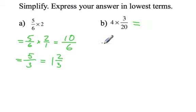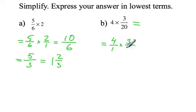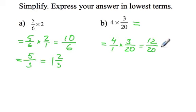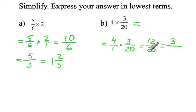Question B. We are multiplying 4 by 3 twentieths. I can rewrite 4 as a fraction and then multiply the numerators and the denominator. So that's 12 over 20, and both numerator and denominator divide by 4. 12 divided by 4 is 3, and 20 divided by 4 is 5.